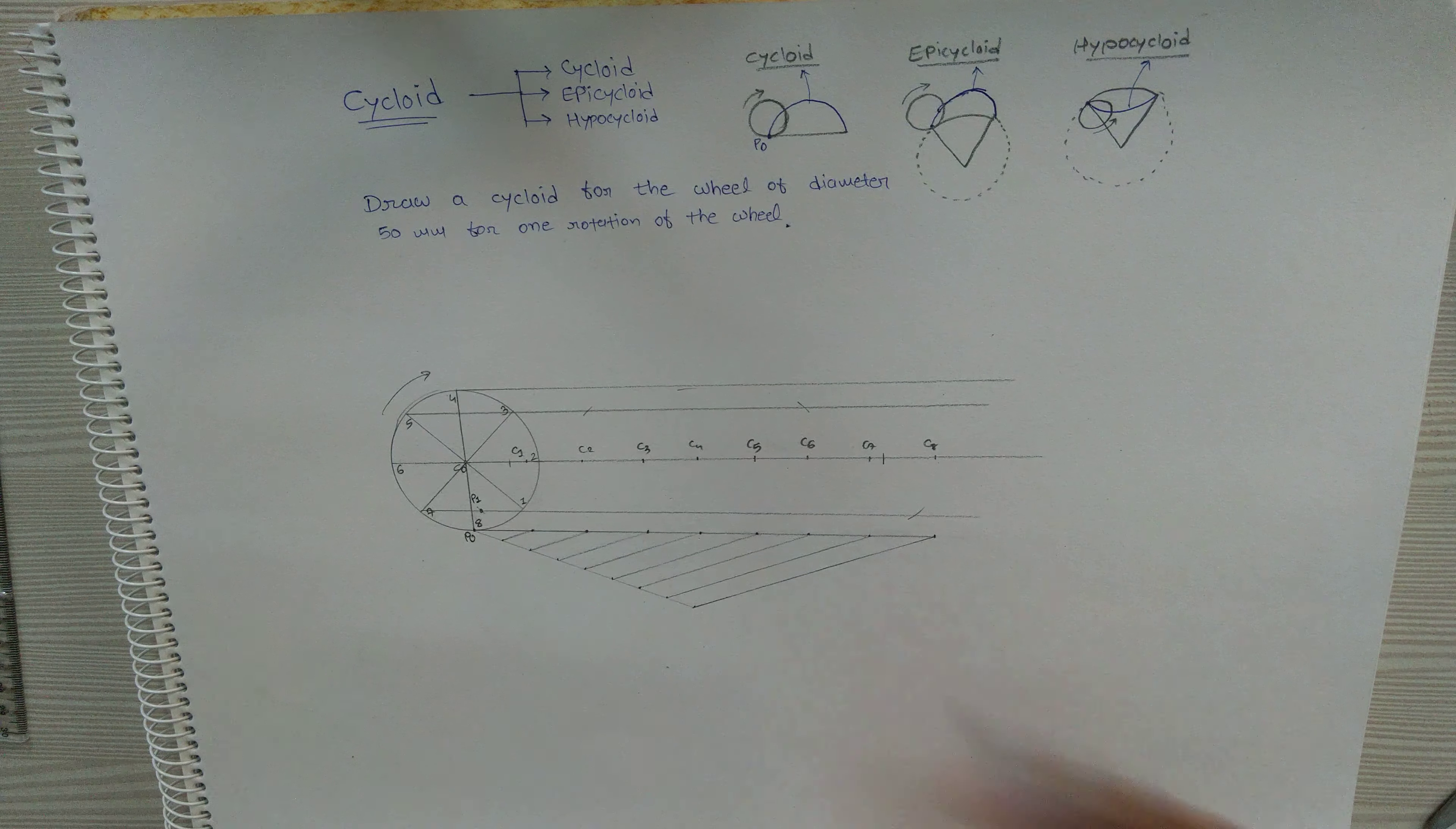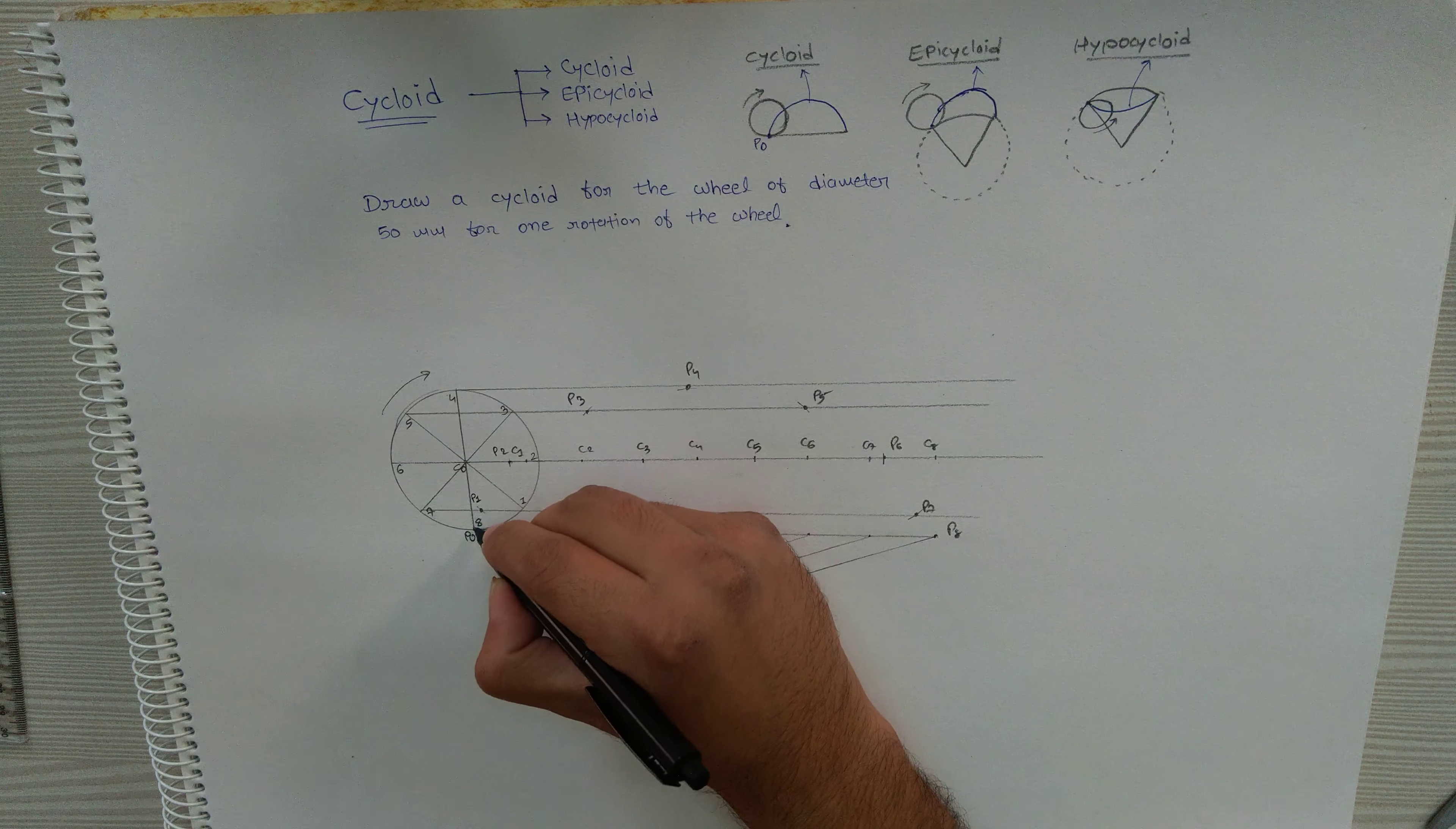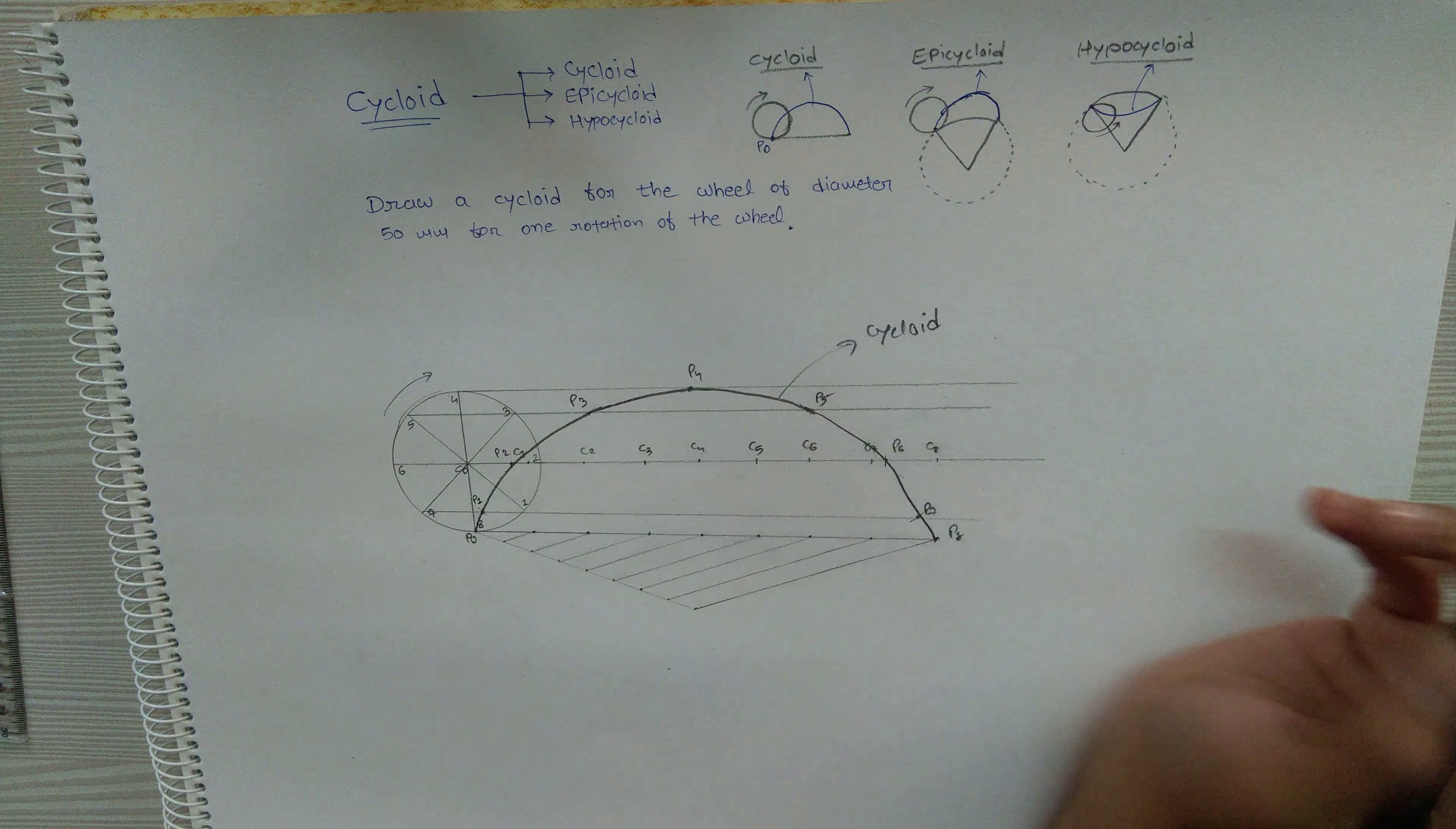And finally eight. All these points are points of the cycloid. You can simply join these points and get the final curve. This is p7 and this is p8. Join these points with a freehand sketch. So this is the required cycloid. Thank you.